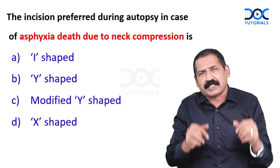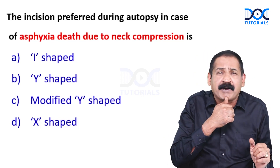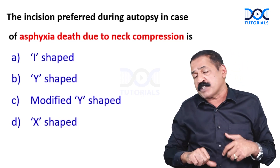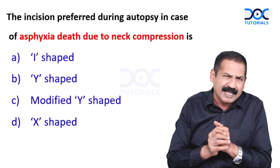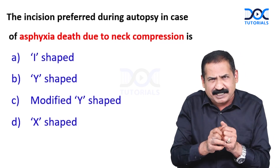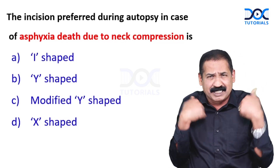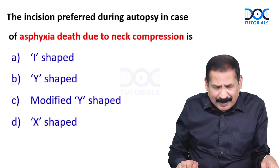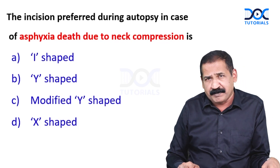All of you know what the I-shaped incision is — from symphysis menti to symphysis pubis, avoiding the umbilicus. X-shaped incision is done in case of torture, as you know very well. The most common incision is I-shaped.